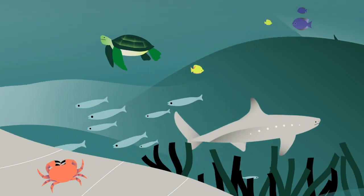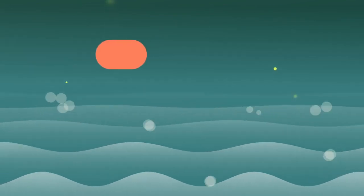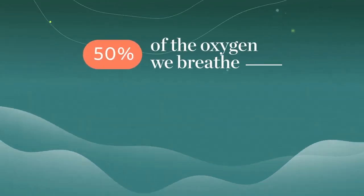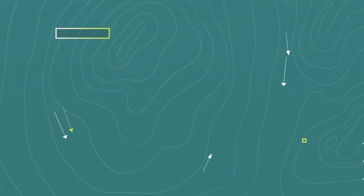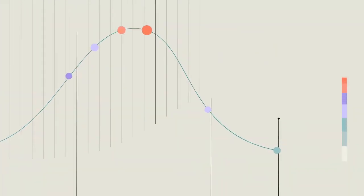Not only is the ocean home to some of the most astounding creatures on Earth, it also provides half of the oxygen we breathe and regulates weather patterns around the world. And parts of the ocean are real superheroes when it comes to preventing further global warming.